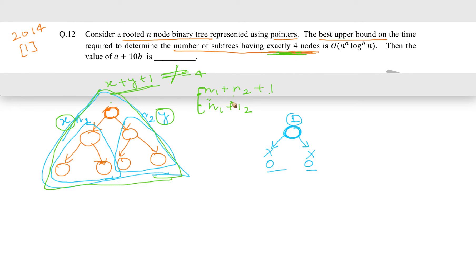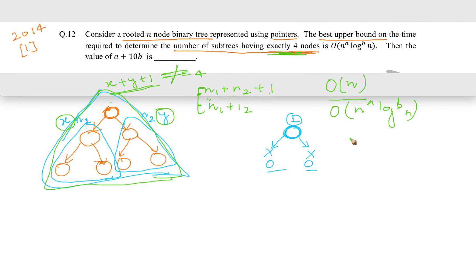We can see that this algorithm is simply doing a traversal — just as we do for counting nodes, here we are scanning every node and returning based on the traversal. The running time is the same as a simple traversal, which is linear, O(n). Comparing with n raised to the power a times log n raised to the power b, we get a equals 1 and b equals 0. Therefore a plus 10b equals 1 plus 0, which equals 1. The answer is 1.